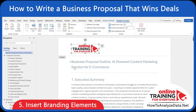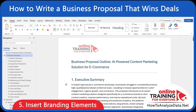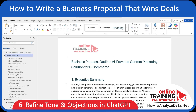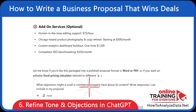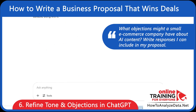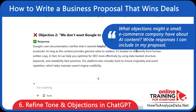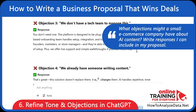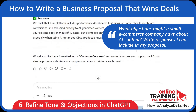If you think something might be missing, now is a good time to improve tone and handle objections. Let's ask ChatGPT to rewrite sections in a more persuasive tone and handle common client objections. If you don't know what the objections might be, ask ChatGPT: what objections might a small e-commerce company have about AI content? Write responses I can include in my proposal.